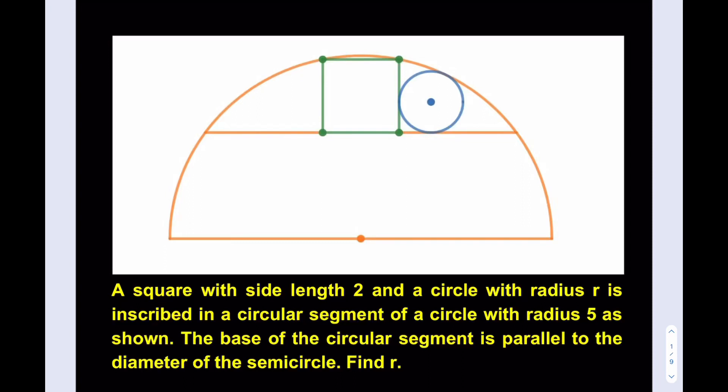Hello everyone, in this video we're going to be solving a geometry puzzle that I really like. We have a square with side length 2 and a circle with radius r inscribed in a circular segment of a semicircle with radius 5 as shown. The base of the circular segment is parallel to the diameter. Find r.